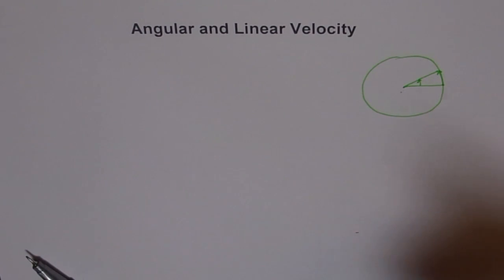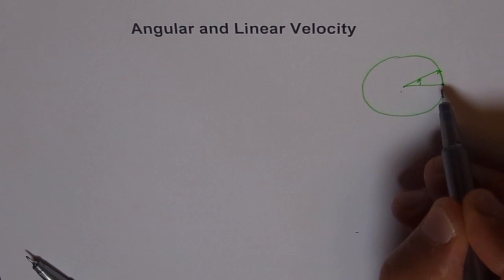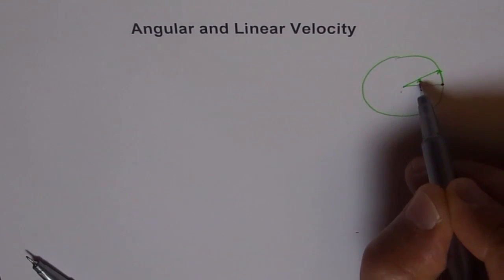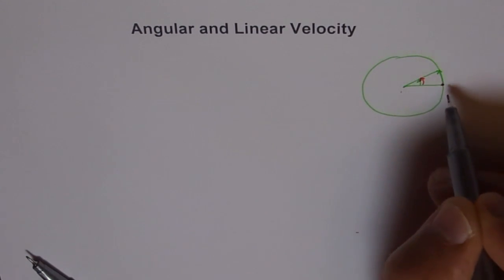Now, how is it related with linear velocity? Let's consider this point here. This point will move along the circular. As it moves, the angle in between changes, and that gives the result to angular velocity.